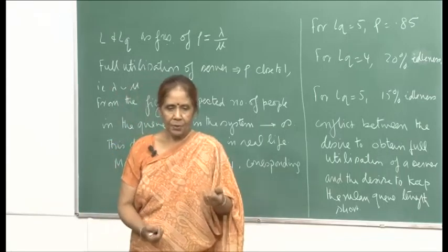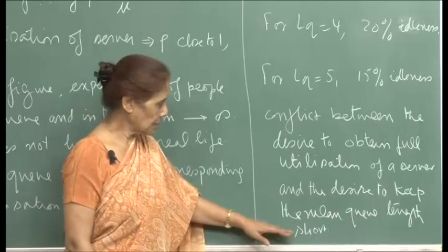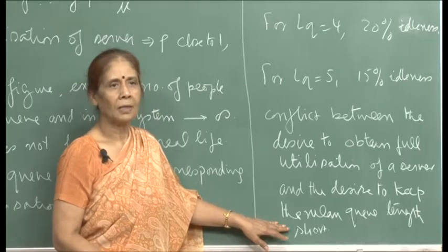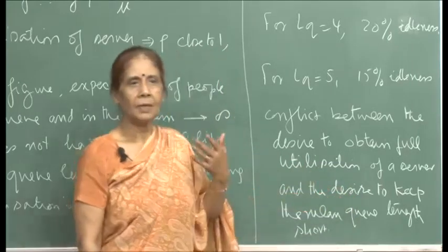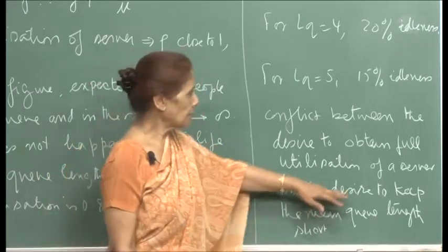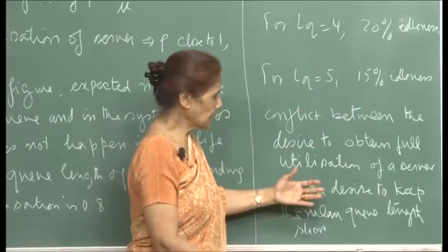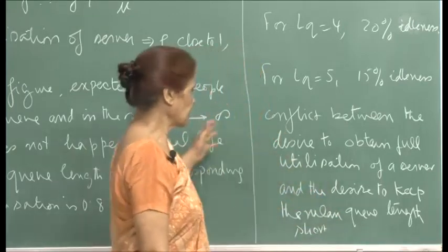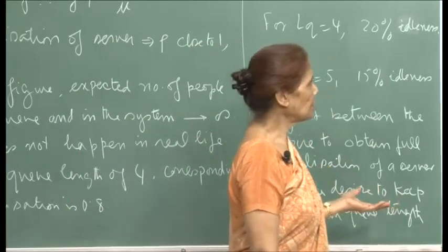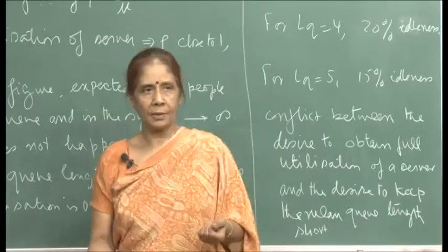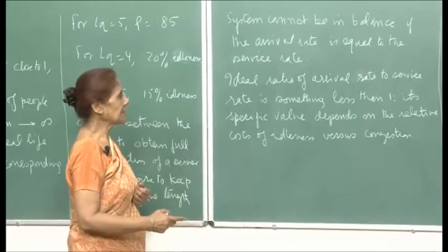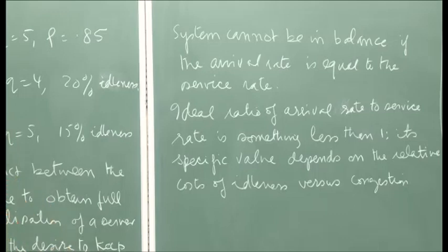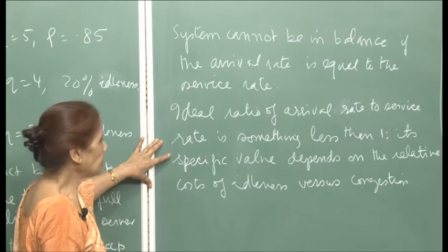Where customer goodwill is important, the persons offering the service would want to make sure queues do not become too big. But where finances are important and you cannot keep too many servers — because that means many salaries — the servers will be idle for a long time. One has to balance. This model shows that the system cannot be in balance if the arrival rate equals the service rate or is even close to it. The ideal ratio of arrival rate to service rate should be less than 1, because your service rate must exceed the arrival rate. The specific value depends on the relative cost of idleness versus congestion.